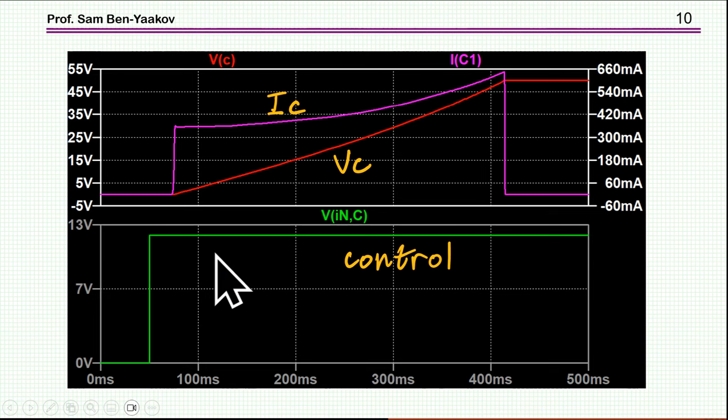So this actually represents this non-linear capacitor. And here is the operation. We see very nicely how the current starts low, and then it goes up as the capacitance is going down, exactly what we want. So this can actually help us with the safe operating area issue.